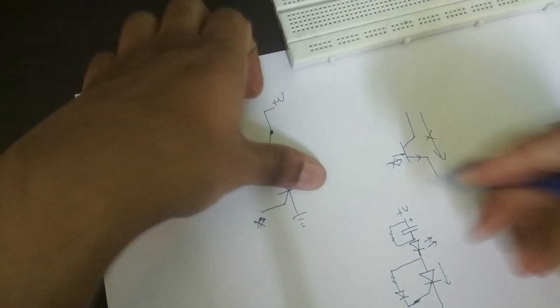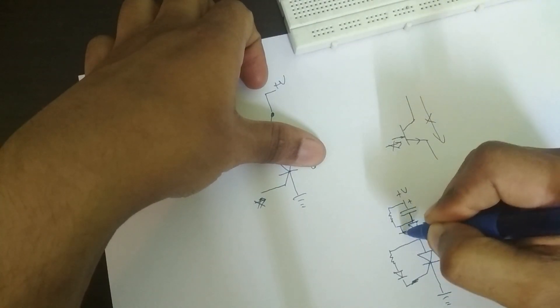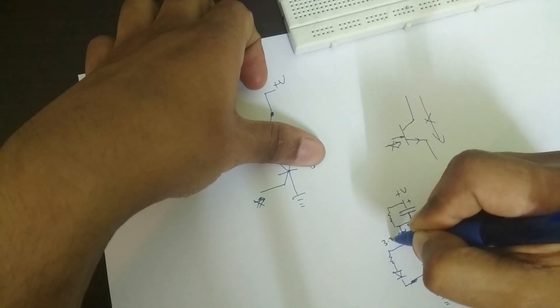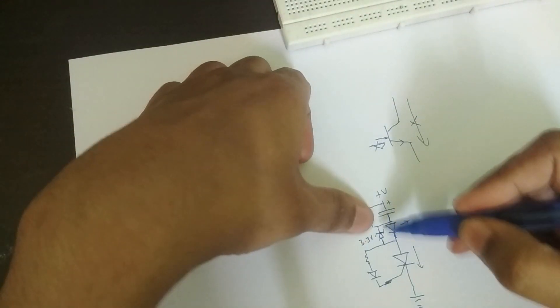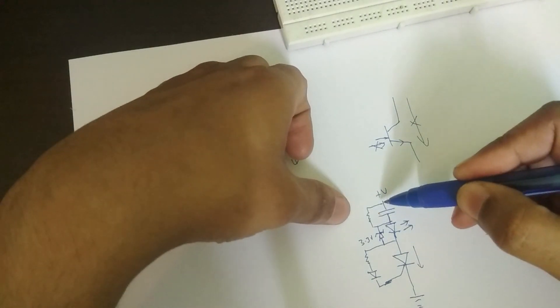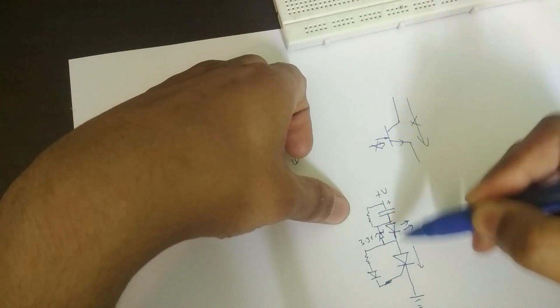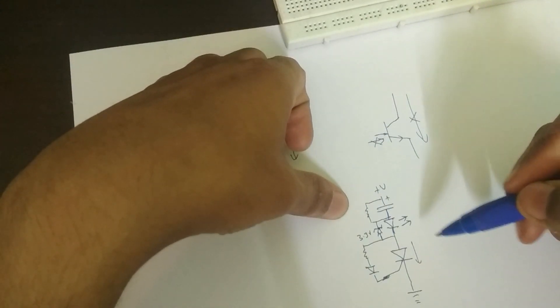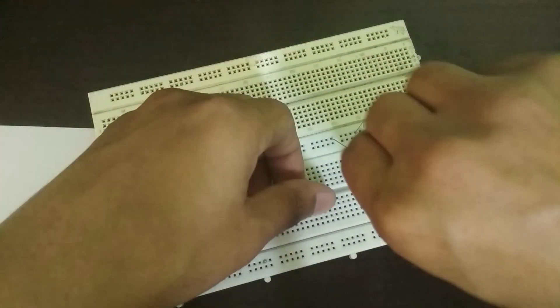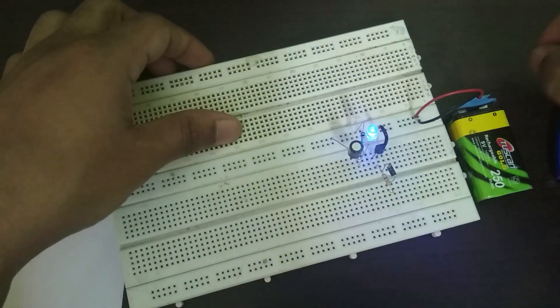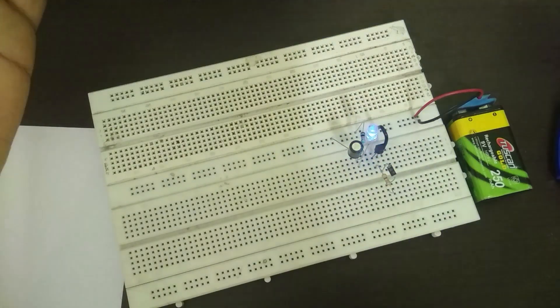There's one additional component, which is a Zener diode. Now why is there? Why is this is a 3.3 volt Zener? And this is here so that some of the current can go around the LED, not all the current has to go through the LED. And that allows the LED to turn off completely. So if I just pull out the Zener diode, you'll see it still works, but it just doesn't turn off completely.